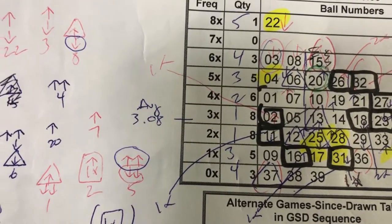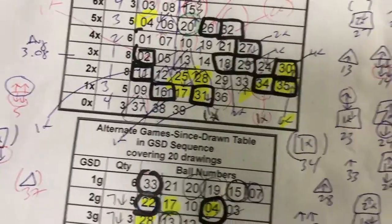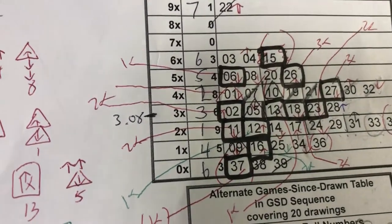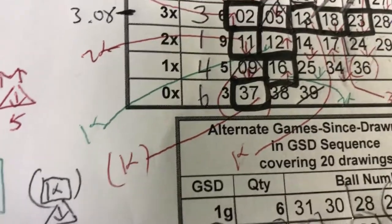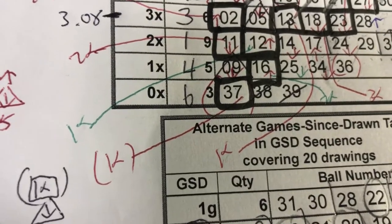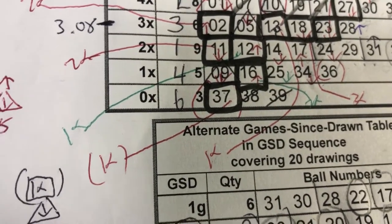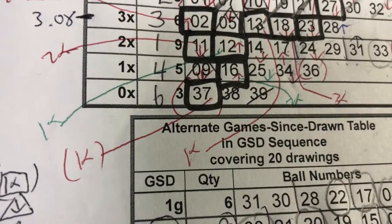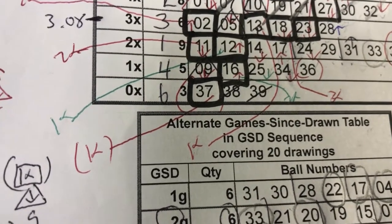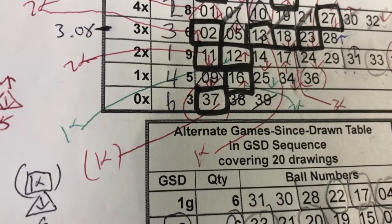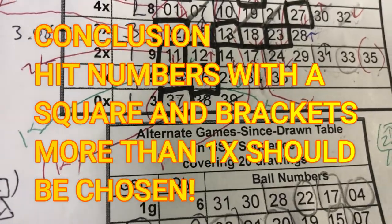It gets a triangle and brackets. And for the upcoming draw, it has 1 square. That's why I have 1x brackets. Now, if it doesn't hit again, I would draw a square with brackets and write 2x brackets. It is a hot number.